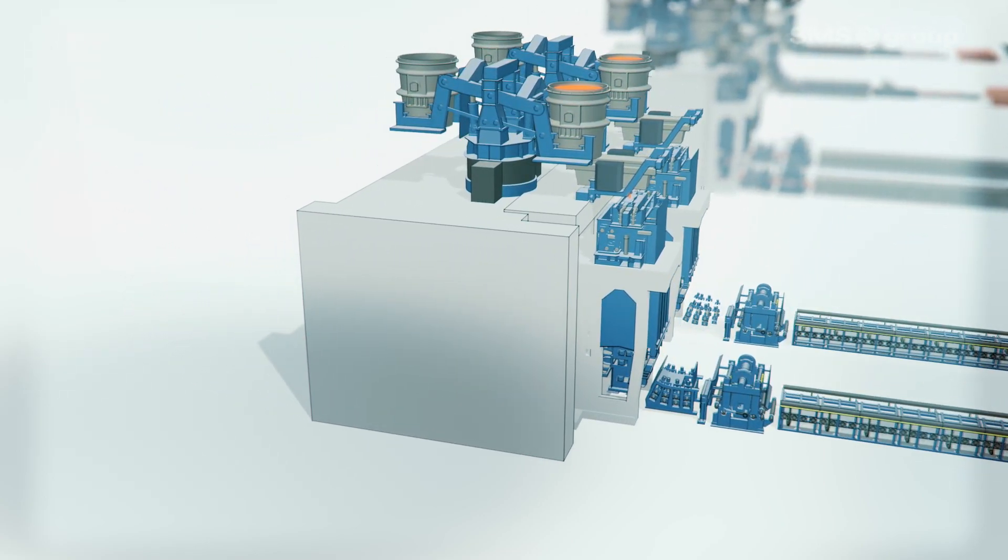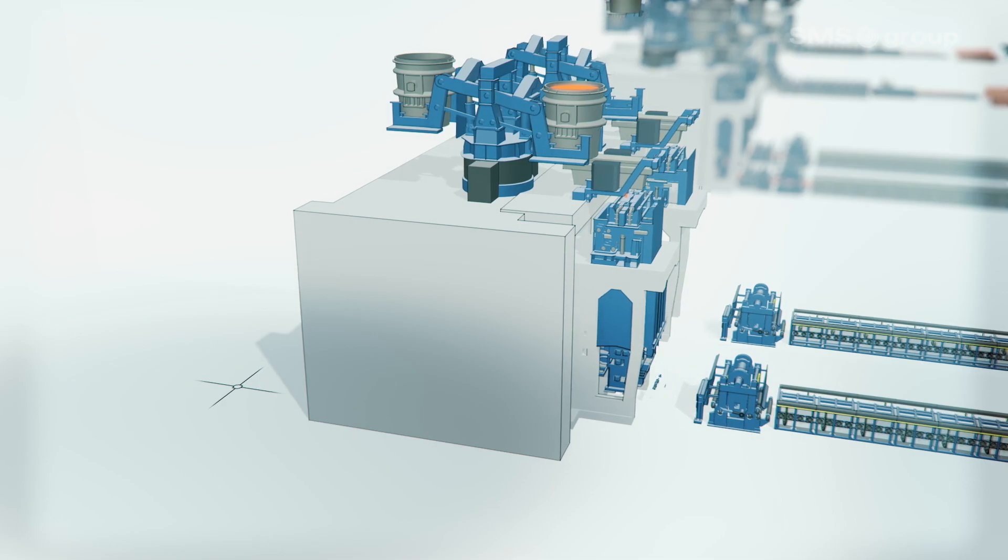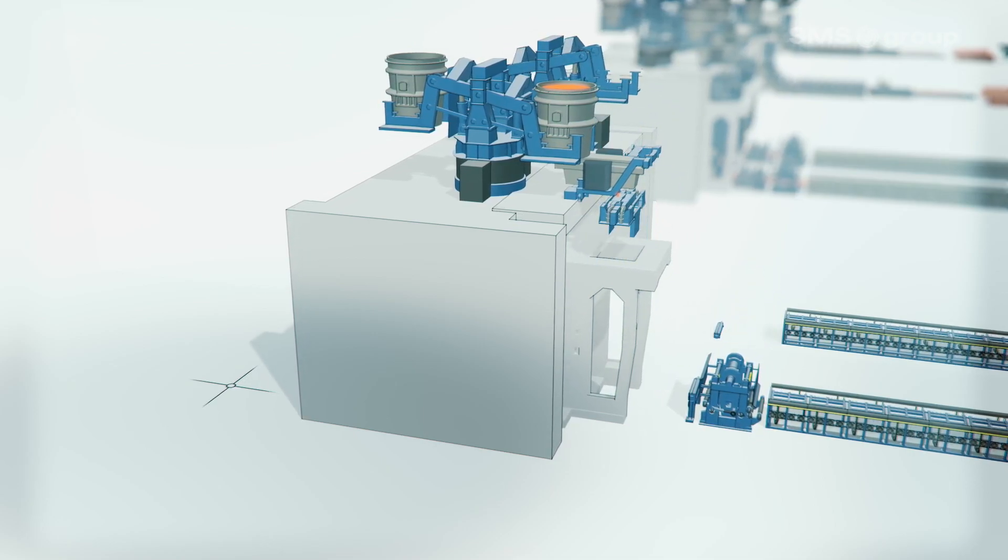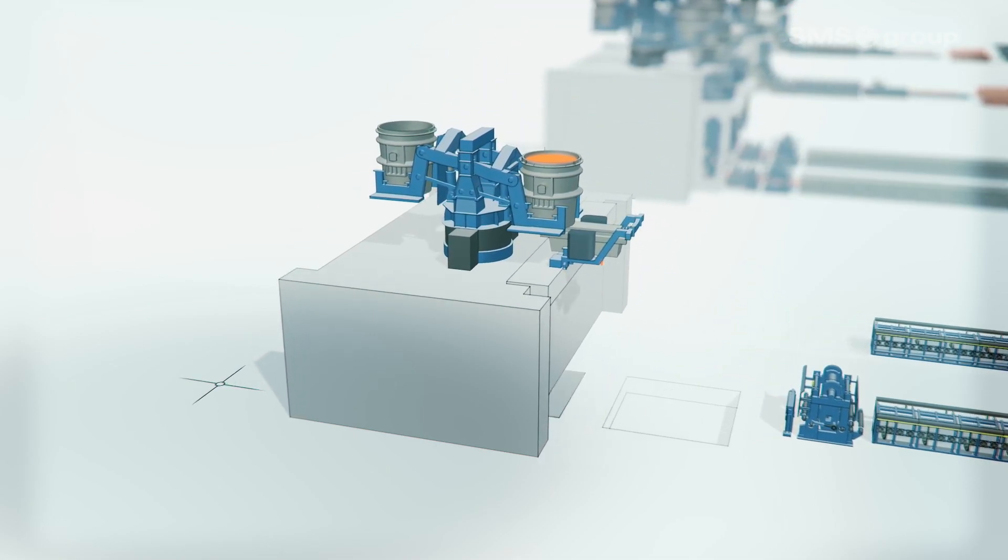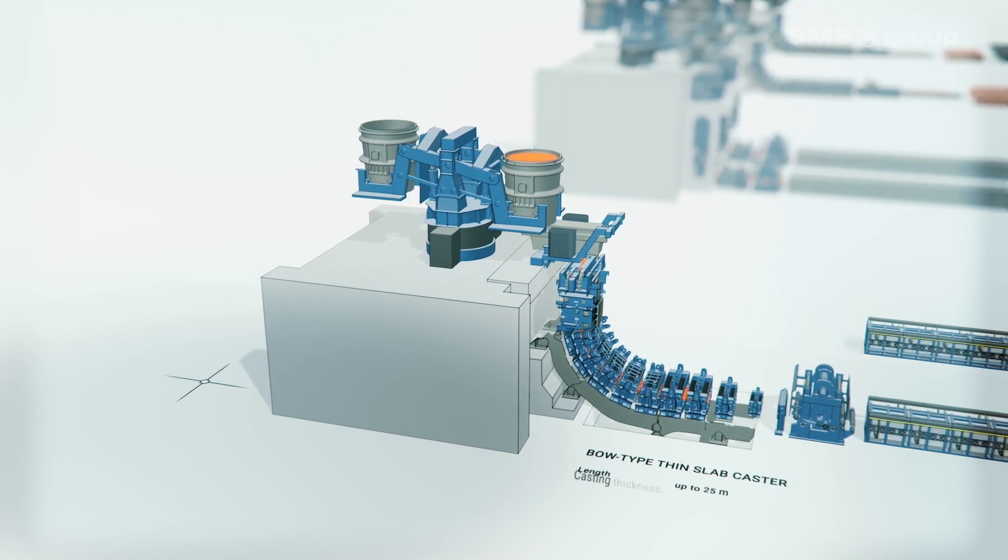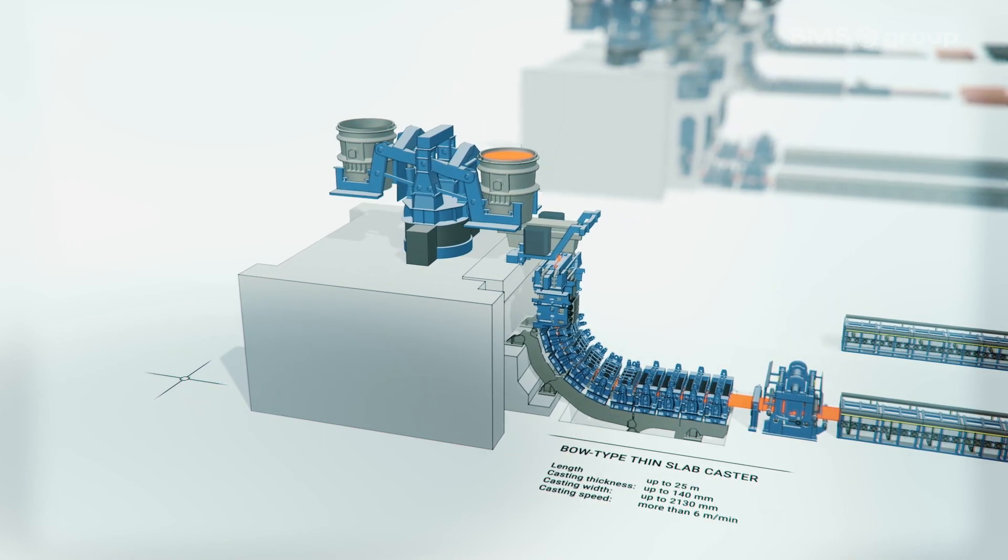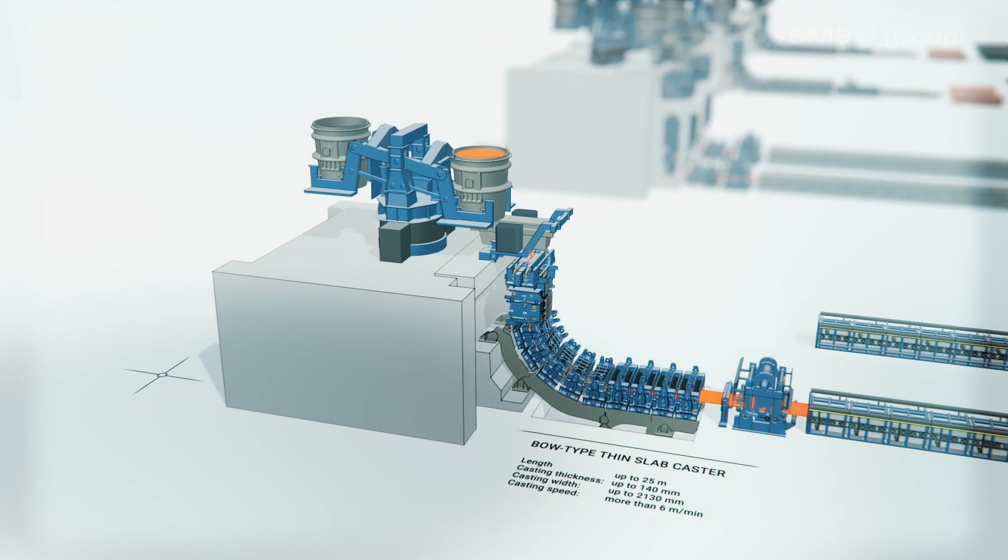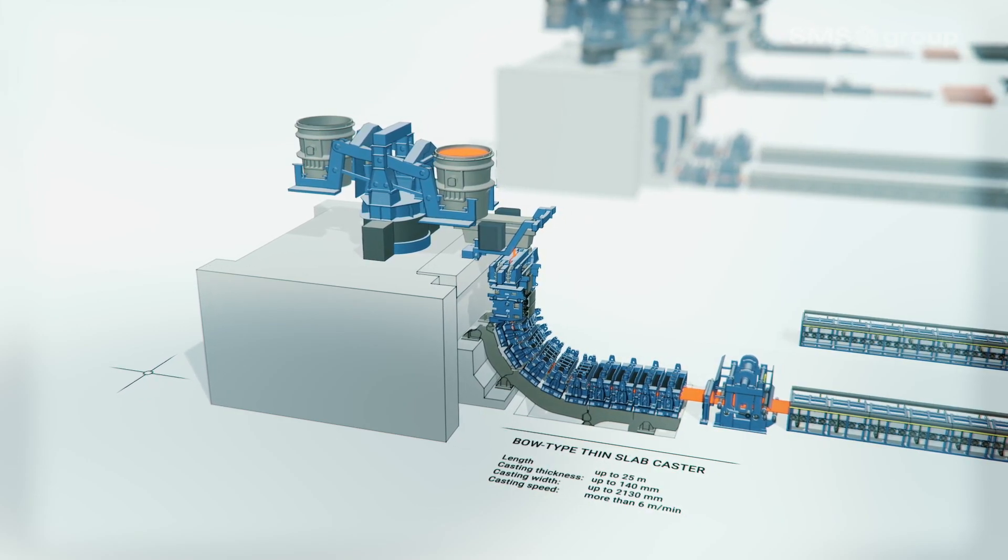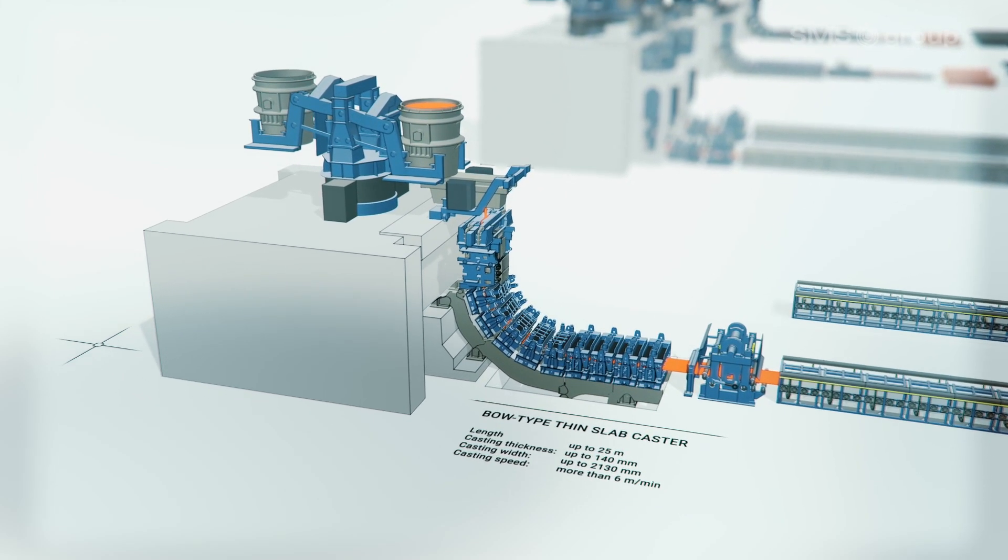The layout shows the basic Nexus setup with a bow-type CSP Nexus casting machine. This is designed for highest productivity and guarantees stable operation under all casting conditions. The increased casting thickness enables higher reduction rates from the slab to the final product.